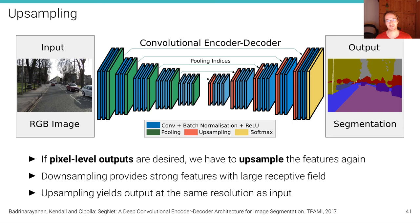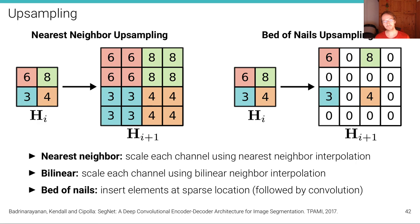Often there are residual-like skip connections that pass information directly from the early layers to the upsampling layers in order to maintain a higher level of accuracy at object boundaries. This is a very common architecture for such an encoder-decoder network, often also called a U-Net architecture because of its U shape.